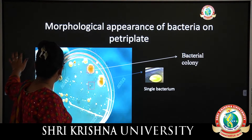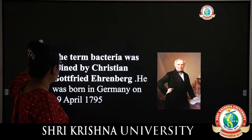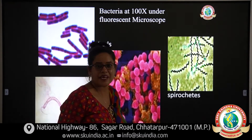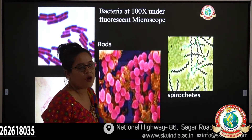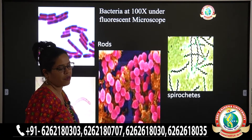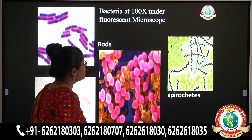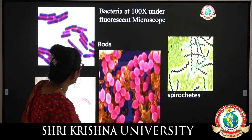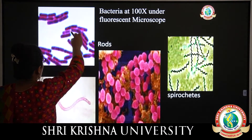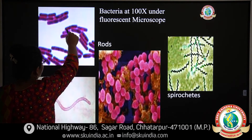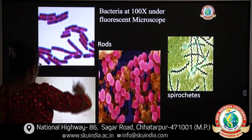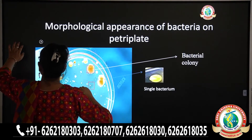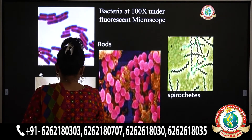We will now see the bacteria under a microscope. This is the structure of bacteria taken at 100x magnification — meaning we are seeing this under a microscope at 100 times magnification. In this 100x view, we have some rod-shaped bacteria. We also have bacteria in the form of spirillum — these are the spiral bacteria.